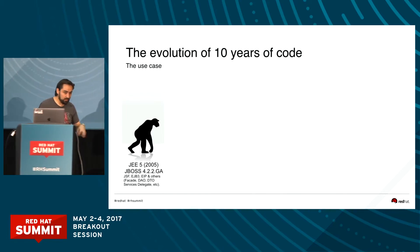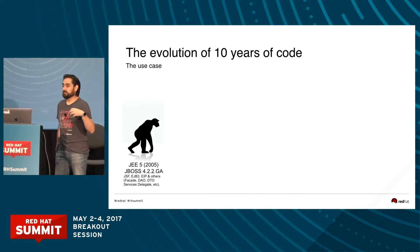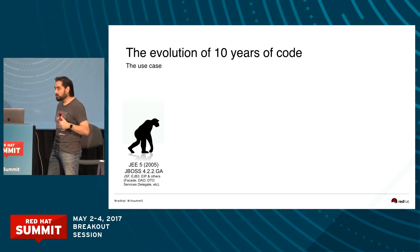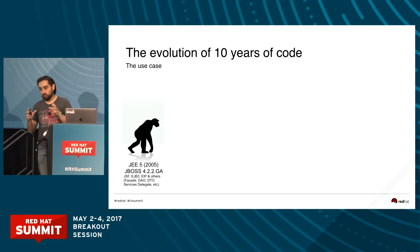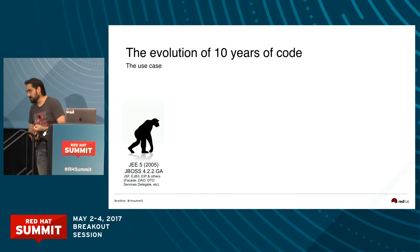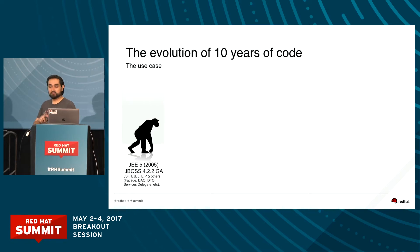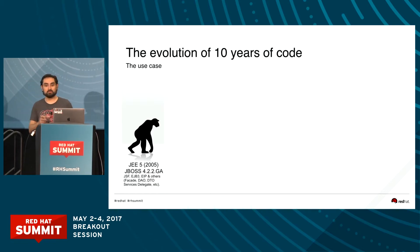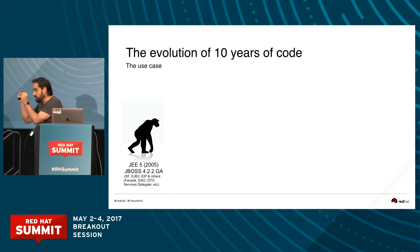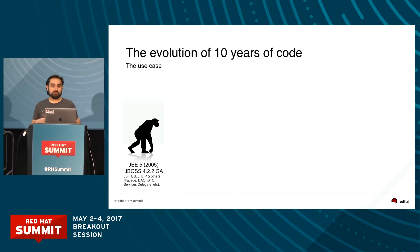One important thing: even back then, the code was not just glue. We used a lot of patterns that helped us in the future to move this code — we used facades, data access objects, DTOs, and service delegate patterns. Later we understood the importance of using patterns when you start to program, because when you take those decisions, they help a lot in the future.